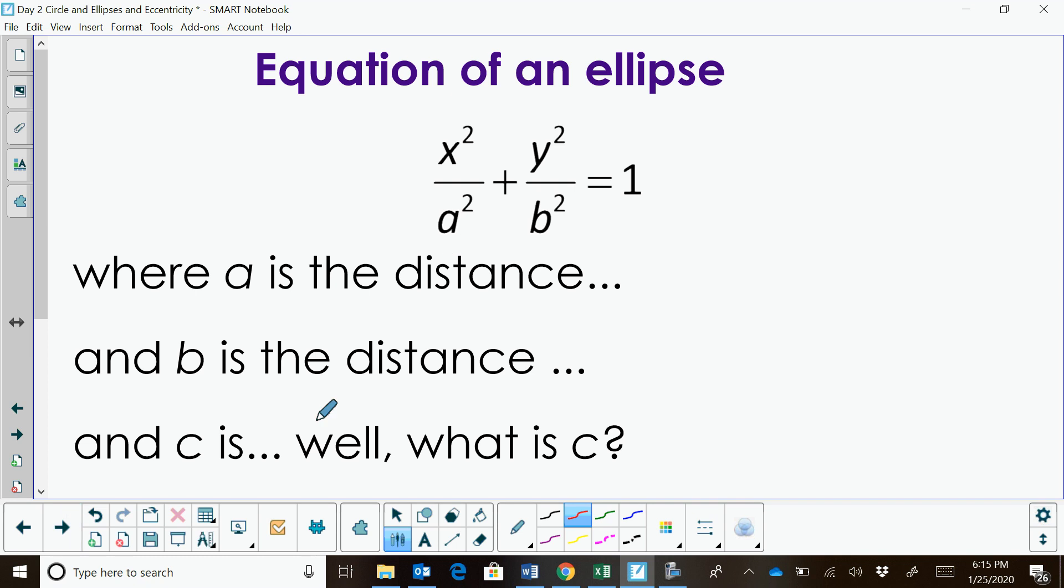So here is the equation of an ellipse that is centered at the origin. It's x²/a² + y²/b² = 1. That's one of the two forms. A is the distance from the center to the vertices, to one of the vertices. B is the distance from the center to the co-vertices along the minor axis. And C, that's the distance from the center to the foci. Notice C is not in the equation, but you will need C to find the position of the focus or the foci.